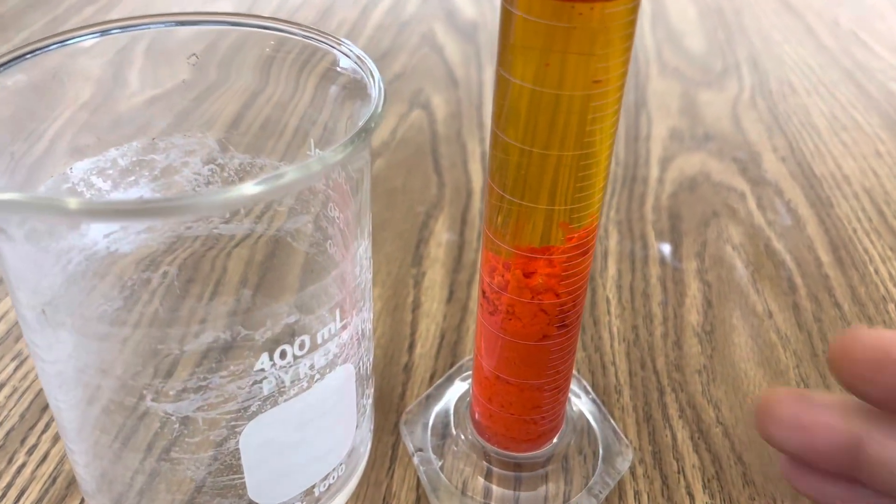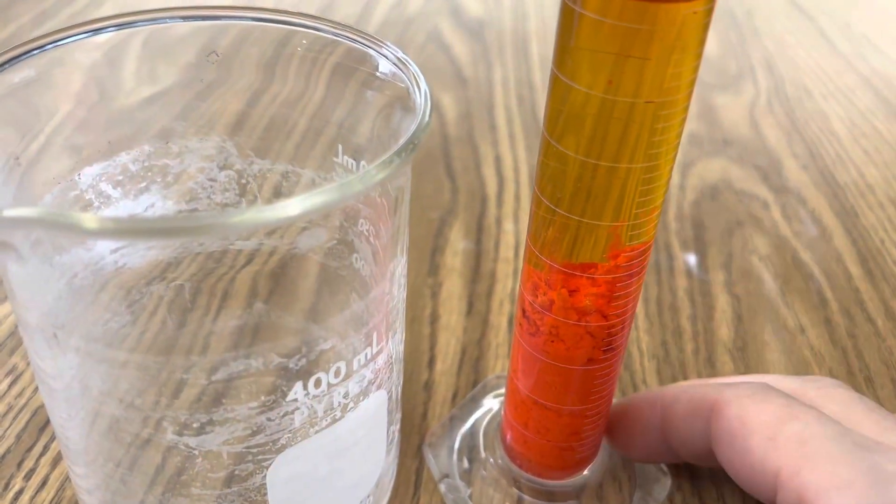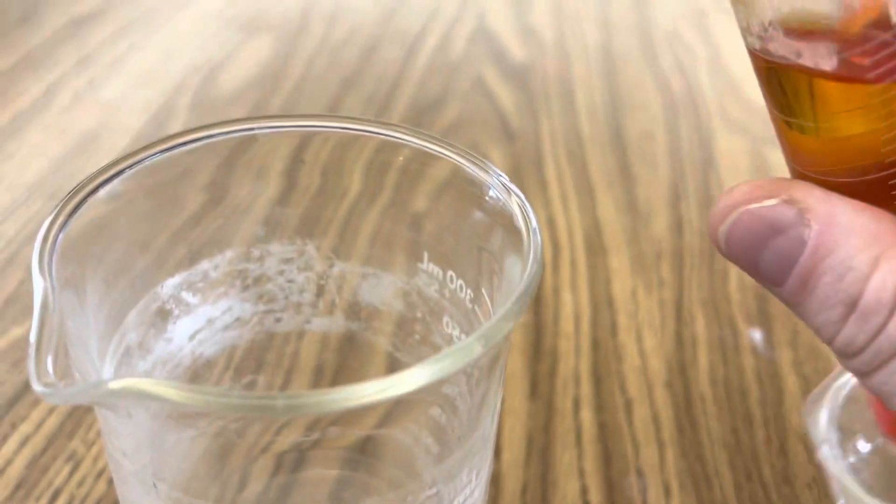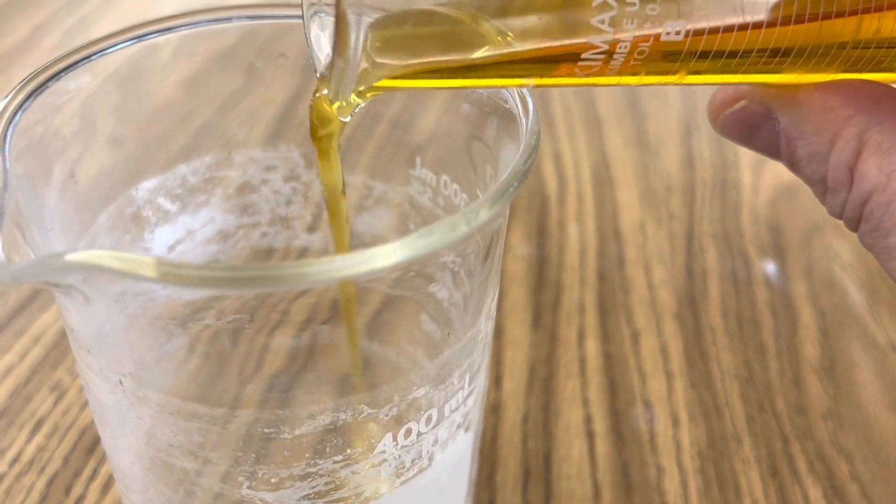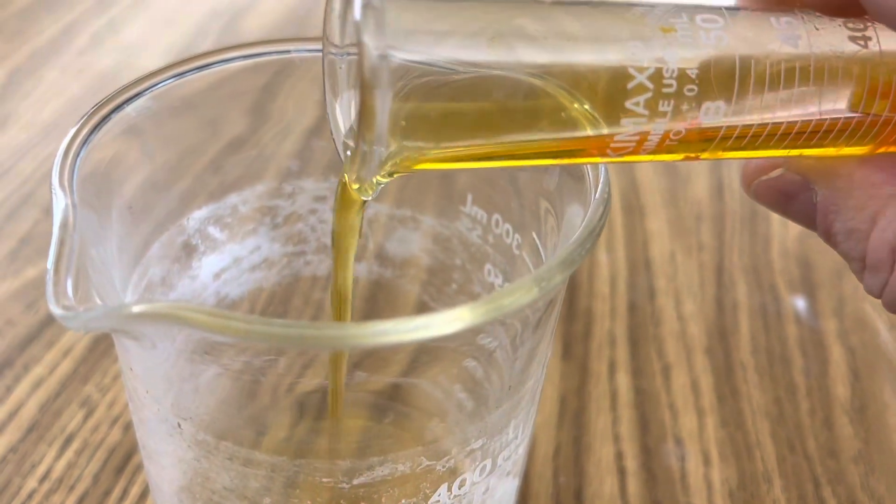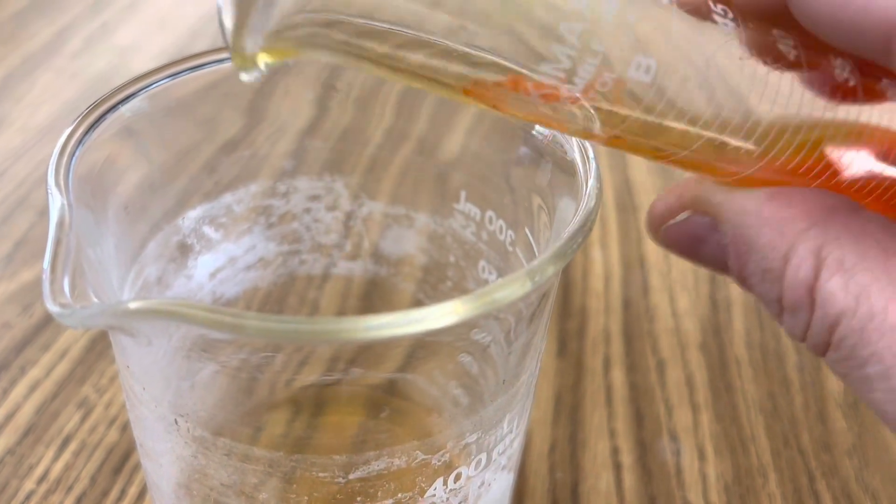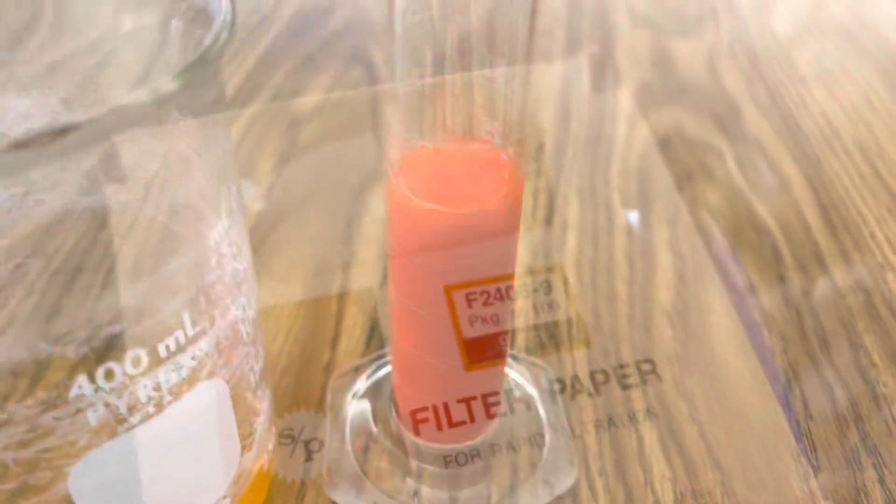Okay now in order to save my precipitant, my mercury iodide, I'm going to decant some of it off the top into my beaker and then I'm going to use vacuum filtration to collect the rest of it.